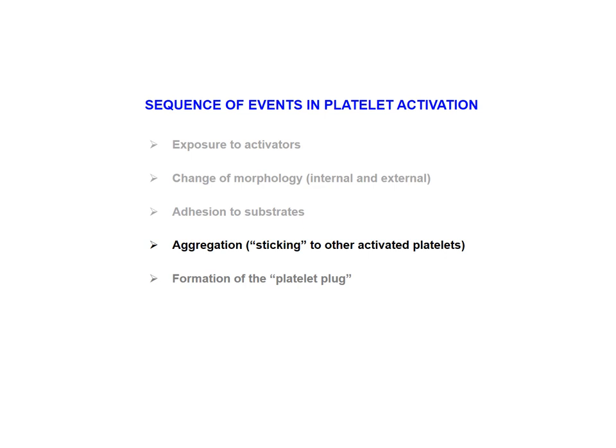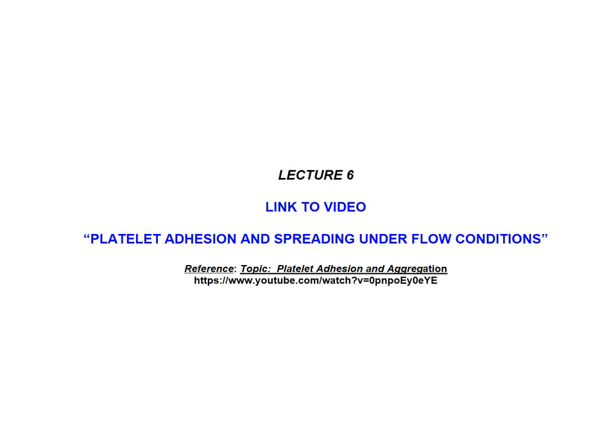The next step in the sequence of platelet activation is aggregation — the process when the activated platelets stick to each other to form that amorphous mass or mesh. The following video has two parts. In both cases, you will see platelets under flow conditions viewed with an appropriate microscope. In the first video, the platelets flow without being activated — therefore they don't adhere, they just flow by on the surface of a substrate, which could be a biomaterial. In the second video, you will see the activated platelets, which not only adhere and spread on the surface of the substrate, but also aggregate.